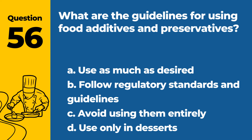Question 56. What are the guidelines for using food additives and preservatives? a. Use as much as desired. b. Follow regulatory standards and guidelines. c. Avoid using them entirely. d. Use only in desserts. Answer: b. Follow regulatory standards and guidelines. This ensures food safety and compliance with food laws.